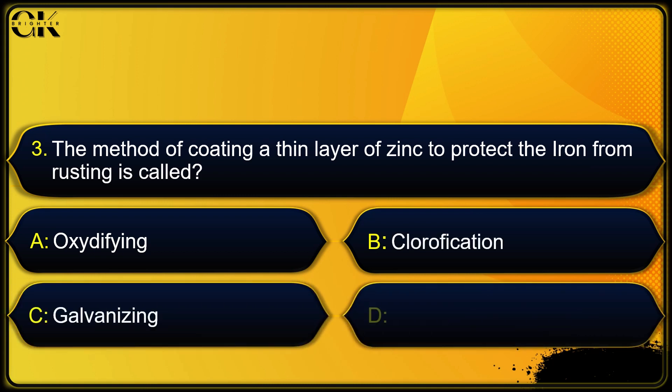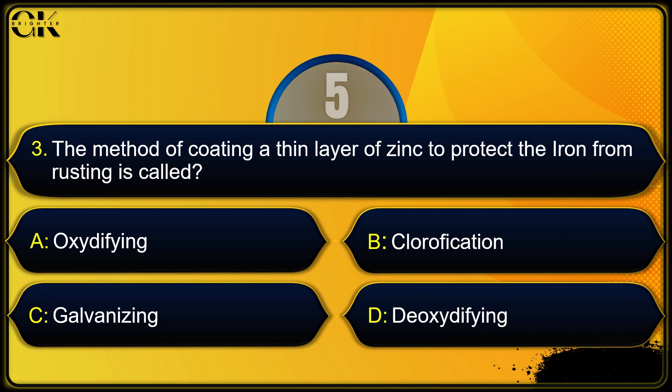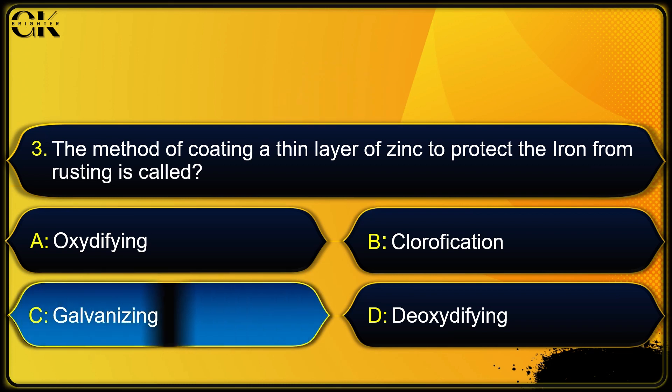The method of coating a thin layer of zinc to protect iron from rusting is called what? Options: oxidifying, chlorification, galvanizing, or deoxidifying. The answer is galvanizing.